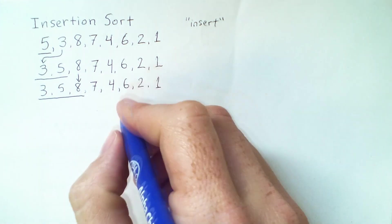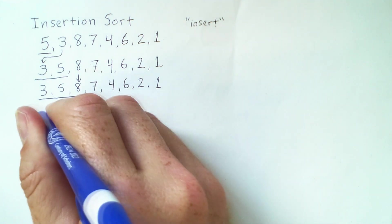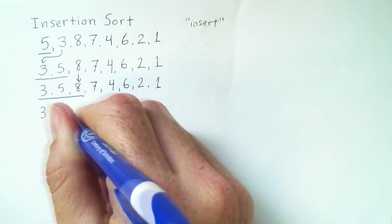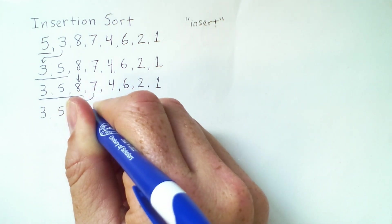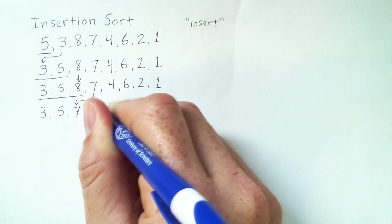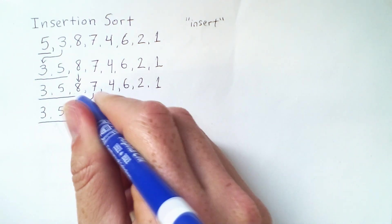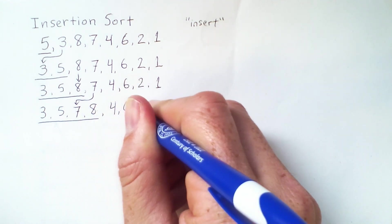The next element we will insert is the 7, so we have to move some things around slightly. Notice that the 8 is pushed forward, but that all of these elements are unmoved.